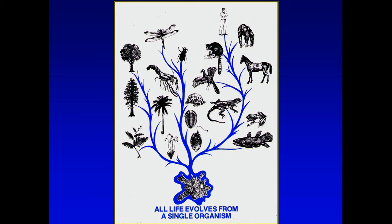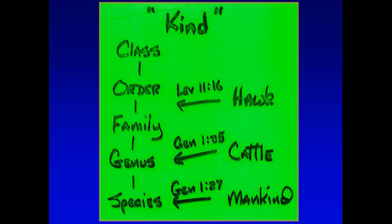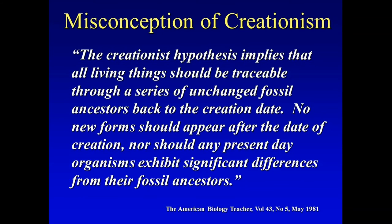Once you get life, if you want to believe the general theory and go from single cell to all the things that exist today, you have a right to do that, but there are a lot of problems with it. The kinds are what God said would reproduce after one another — he never used the word 'species.' Most creationist organizations believe the kind is the species, and they allow for certain variation, but in essence say everything was created as it is from the beginning.